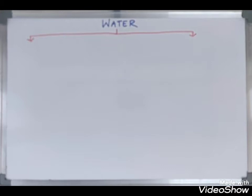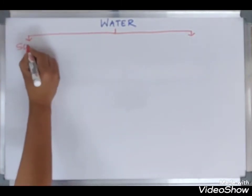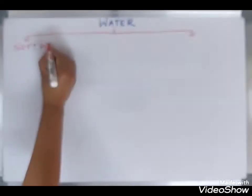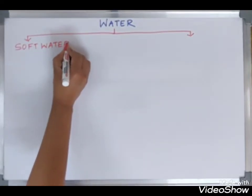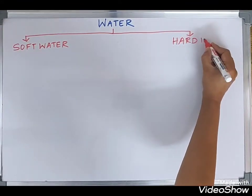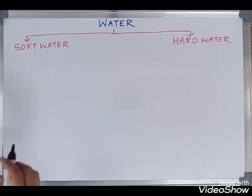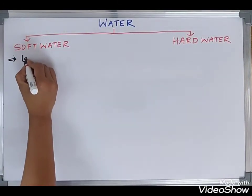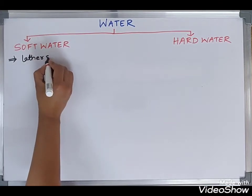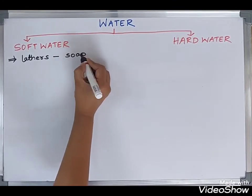Now let us learn the next concept of water. Water is classified into two types based on its action with soap: soft water and hard water. If water lathers readily with ordinary soap, we call it soft water. If water does not lather with ordinary soap, we call it hard water.